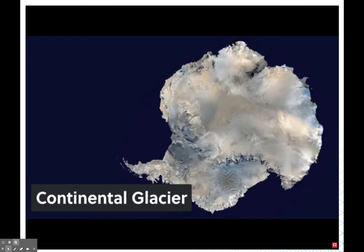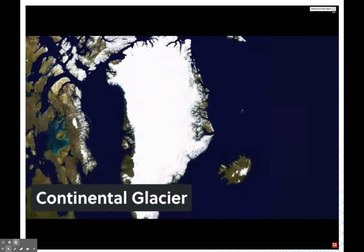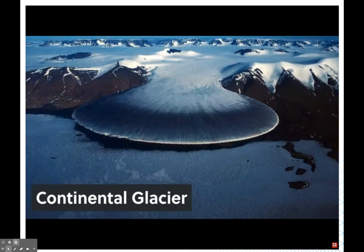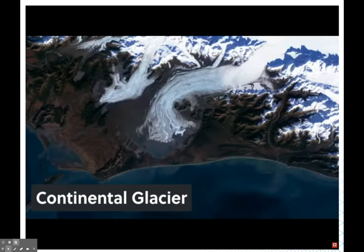A great example of a continental glacier is Antarctica — a huge thick sheet of ice covering virtually the entire land mass. We see something similar in Greenland, where large sheets of ice ooze out from the center towards the coastline, slowly grinding away the rock beneath.